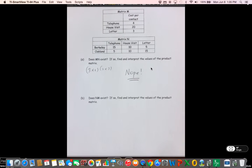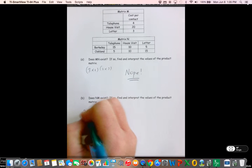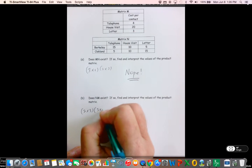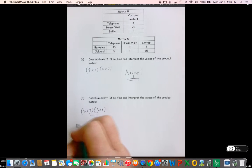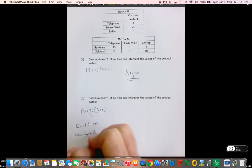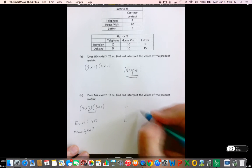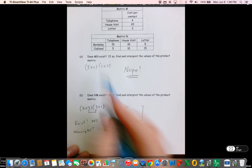Does NM exist? Alright, well N is a 2 by 3, M is a 3 by 1. So it does exist.